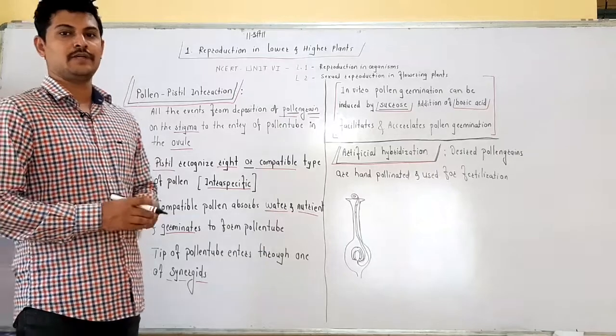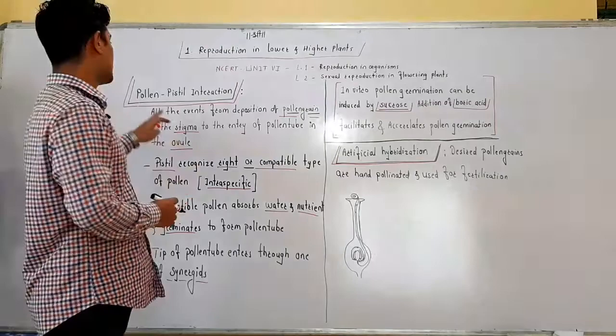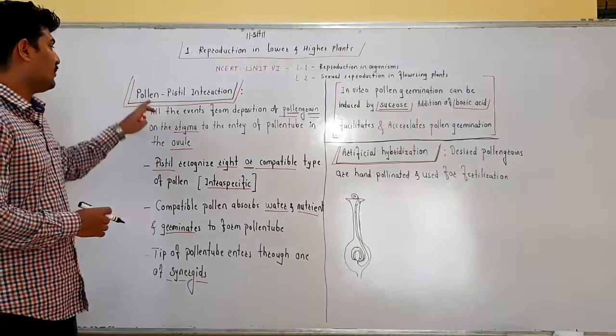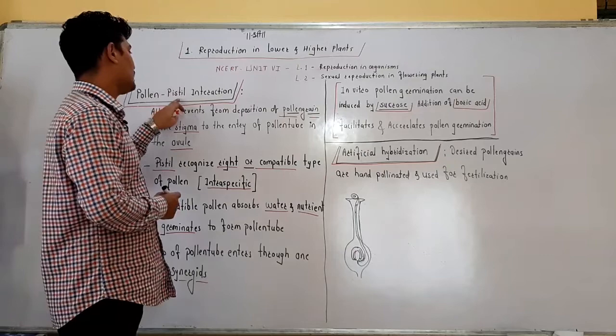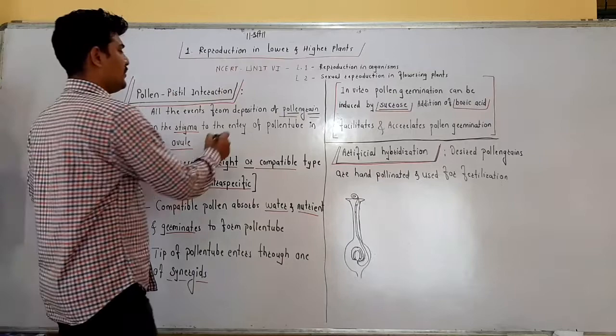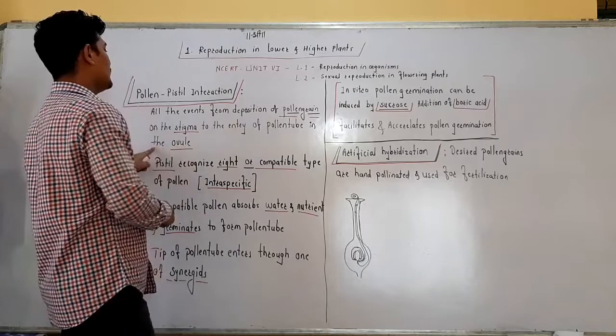Hello friends, welcome to the new session on reproduction in lower and higher plants. We are going to discuss pollen-pistil interaction. So what is pollen-pistil interaction? We know pollination occurs, and when pollination occurs it transfers the pollen grains from the anther to the stigma of the flower. The pistil is the gynoecium — the female reproductive part of the flower. All the events from the deposition of the pollen grain on the stigma to the entry of the pollen tube into the ovule are considered as the pollen-pistil interaction.